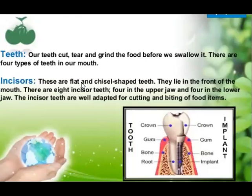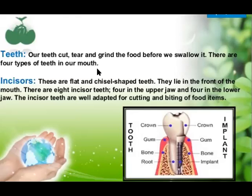Now we will discuss about the teeth. Our teeth cut, tear, and grind the food before we swallow it. There are four types of teeth in our mouth: incisor, canine, premolar, and molar. This is the structure of a tooth.